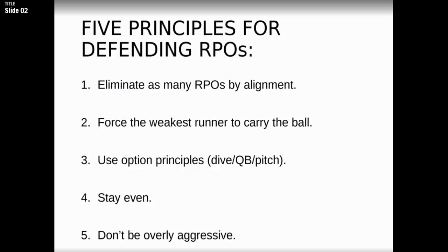You've got to eliminate as many RPOs by alignment. You can eliminate the passing RPOs off of alignment with cover downs. You can press the corners. You can do certain things in certain formations to eliminate the screen reads for the offense. Most high school offenses aren't running third-level RPOs, which is reading the spinning of the safeties. But in terms of eliminating as many RPOs as possible off of alignment...